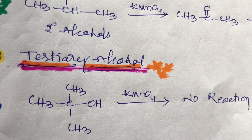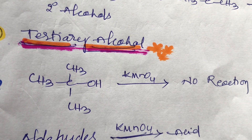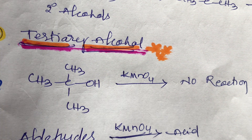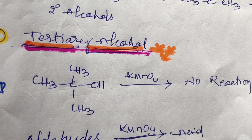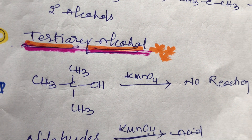Aldehydes are converted into acids in the presence of KMnO4. For example, KMnO4 converts aldehyde to give acid. These are very important points.